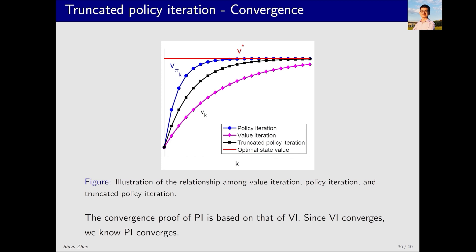The results can be better illustrated by a figure. The horizontal axis is k, the iteration index, and the vertical axis is the values. For simplicity, we consider a one-dimensional state value. The red line represents v star, the optimal state value. The purple line represents v_pi_k from policy iteration, which converges to v star. The blue/purple line represents v_k from value iteration, which also gradually converges towards v star. The black line represents truncated policy iteration, which calculates a finite number of j steps per iteration — higher than v_k but lower than v_pi_k, positioned between the two. Since both bounding lines converge, it is reasonable to infer that the black line also converges.